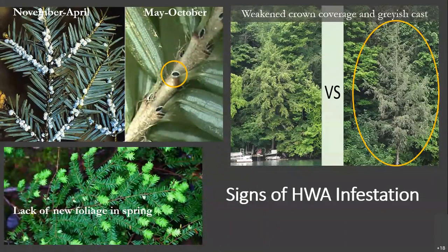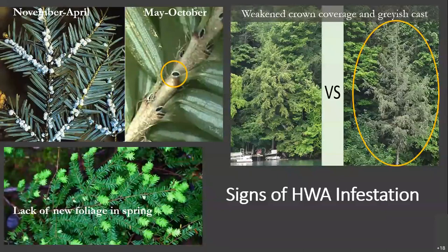When standing on the ground, look up into the branches for these white woolly masses — they look like tiny cotton swabs, as you can see in the picture on the top left. From May to October, look for a small black nymph about the size of a sesame seed surrounded by white hairs, giving it a little halo appearance — circled in yellow in the middle photo. Infested trees will show symptoms such as loss of crown coverage and a grayish cast, as seen in the far right photo. Another sign is the lack of that bright green new foliage at the ends of hemlock branches in spring; when HWA is taking the sap from the trees, the tree can't produce those beautiful new shoots.